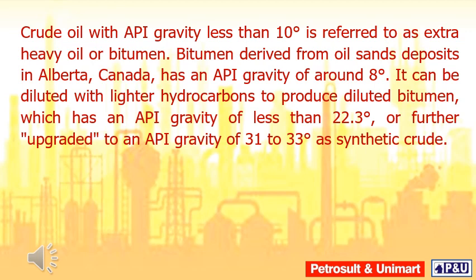Bitumen derived from oil sands deposits in Alberta, Canada, has an API gravity of around 8 degrees. It can be diluted with lighter hydrocarbons to produce diluted bitumen, which has an API gravity of less than 22.3 degrees, or further upgraded to an API gravity of 31 to 33 degrees as synthetic crude.